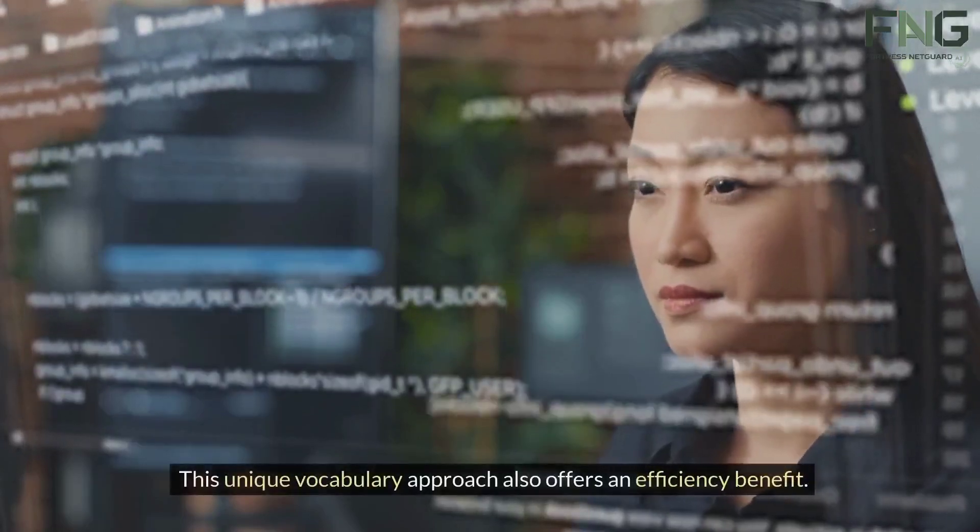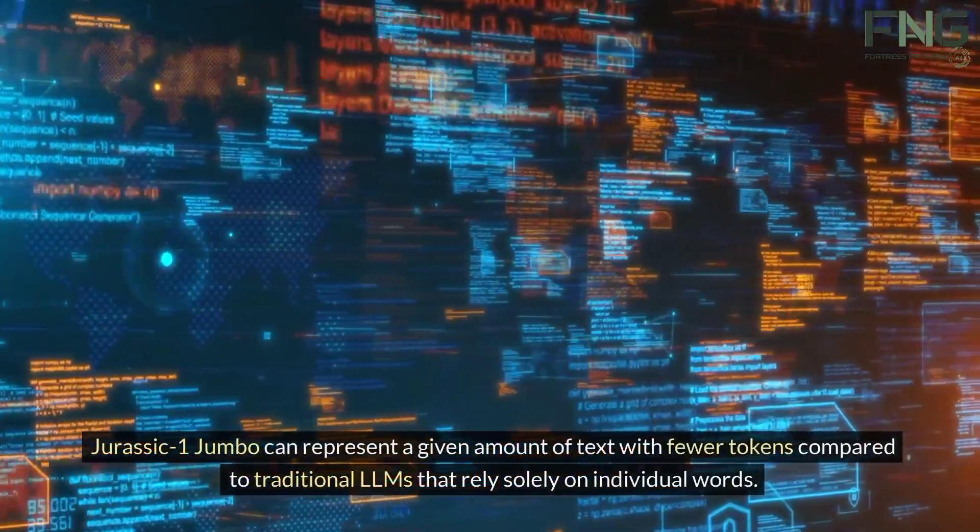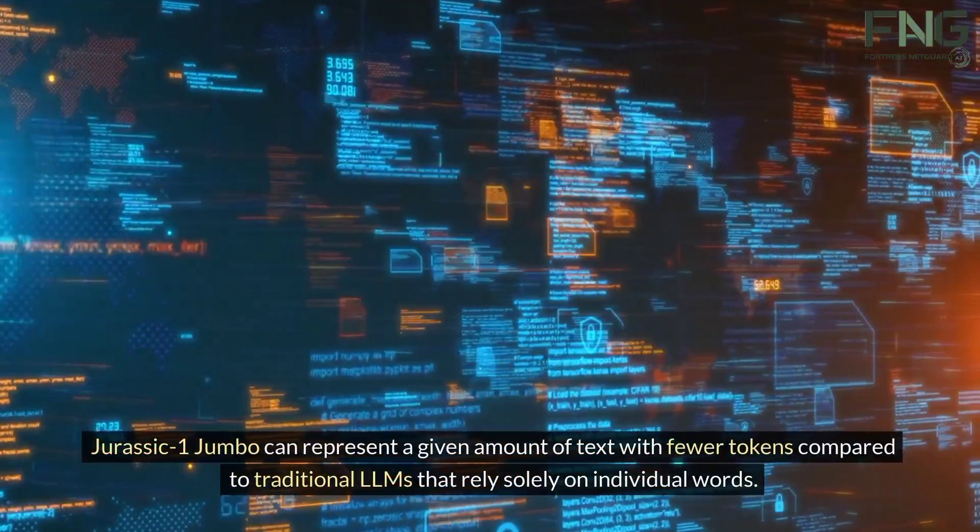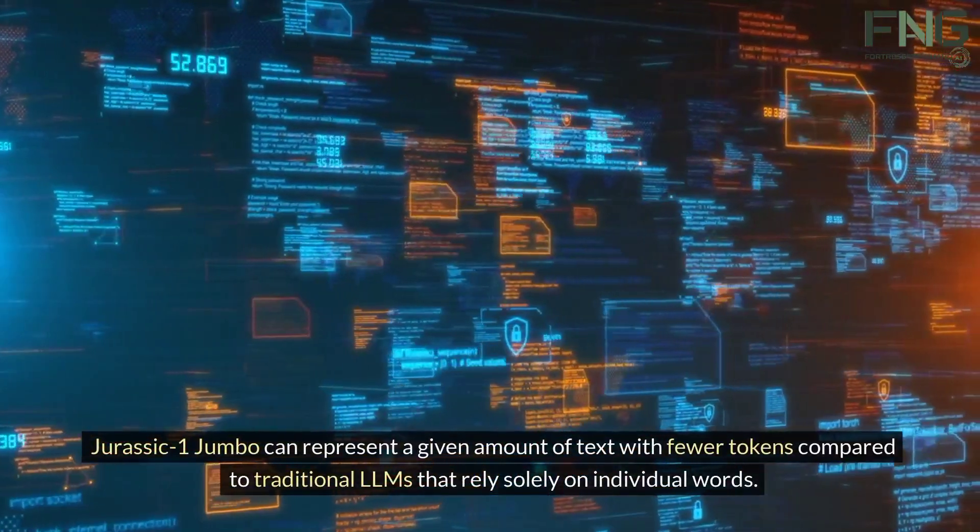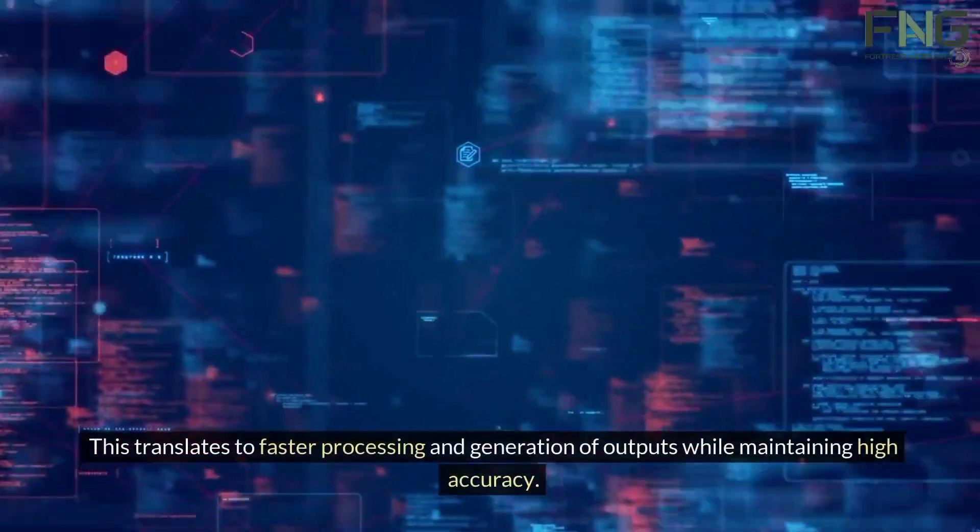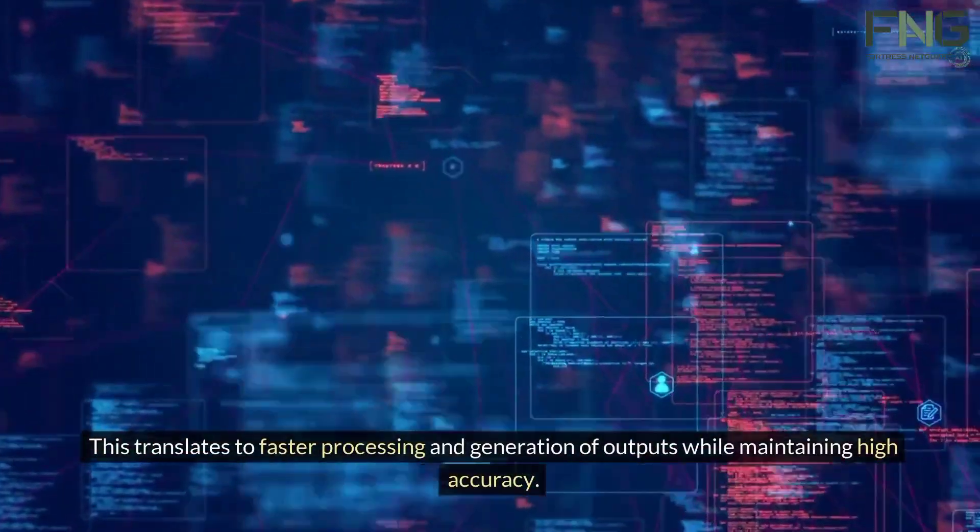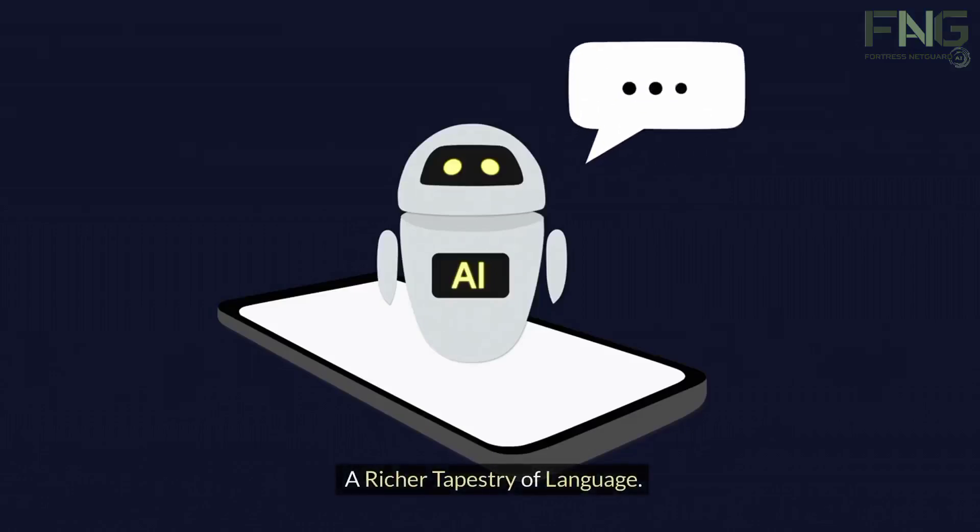This unique vocabulary approach also offers an efficiency benefit. Jurassic-1 Jumbo can represent a given amount of text with fewer tokens compared to traditional LLMs that rely solely on individual words. This translates to faster processing and generation of outputs while maintaining high accuracy.